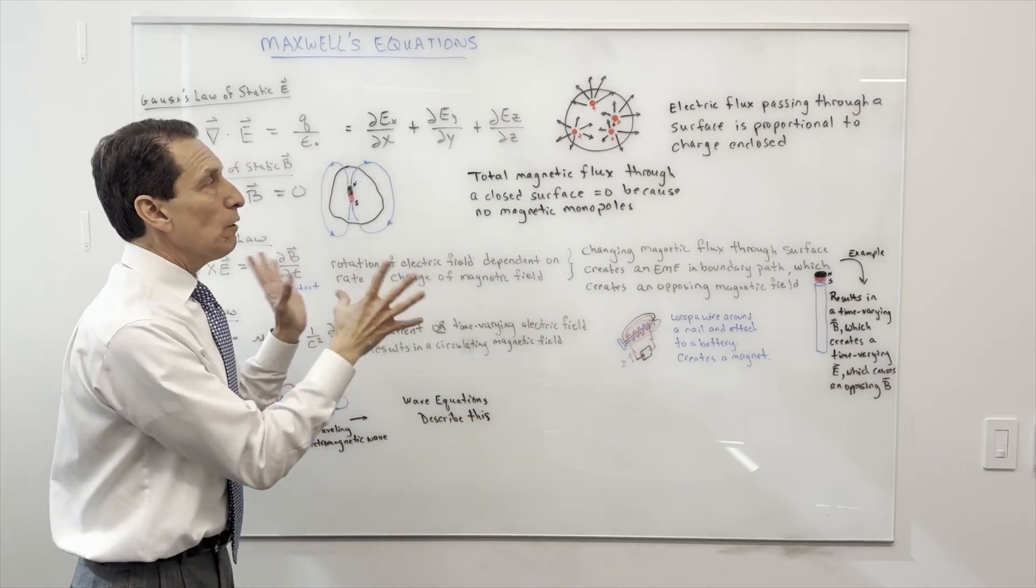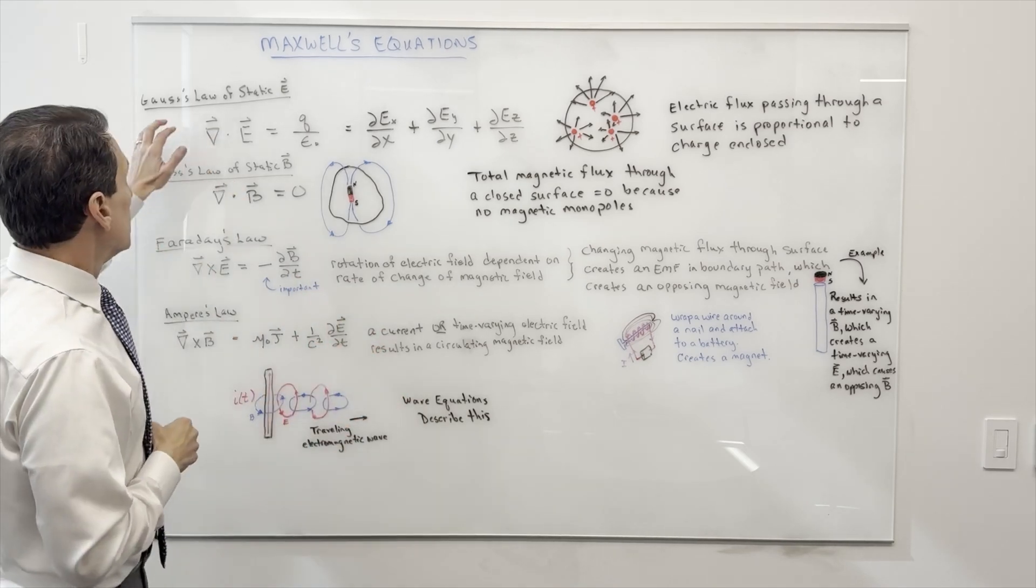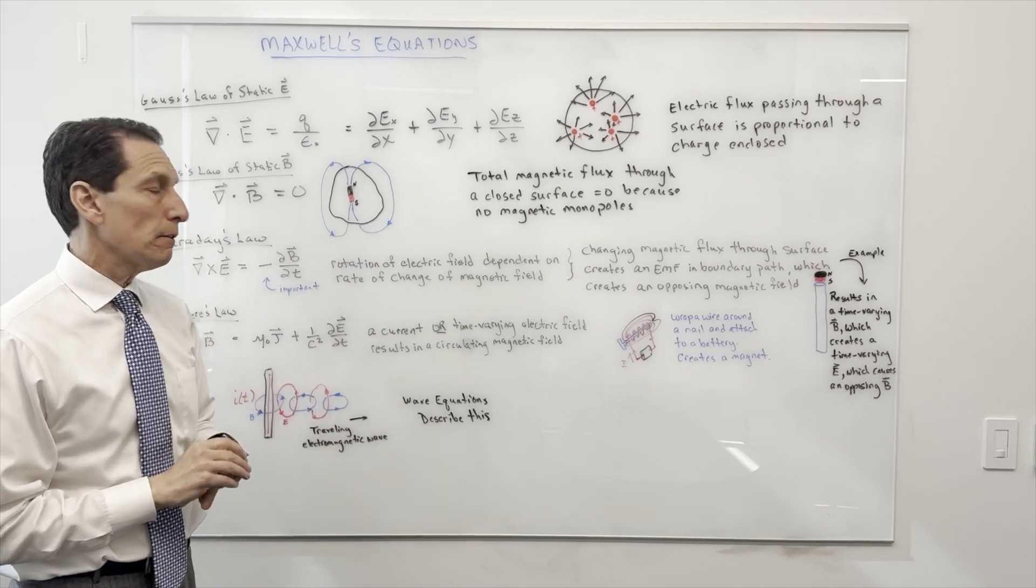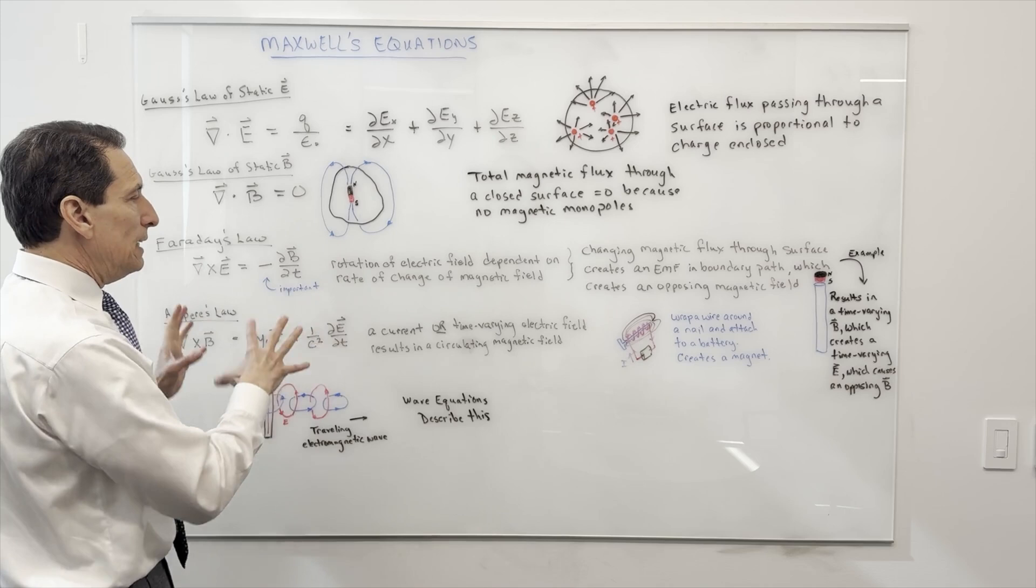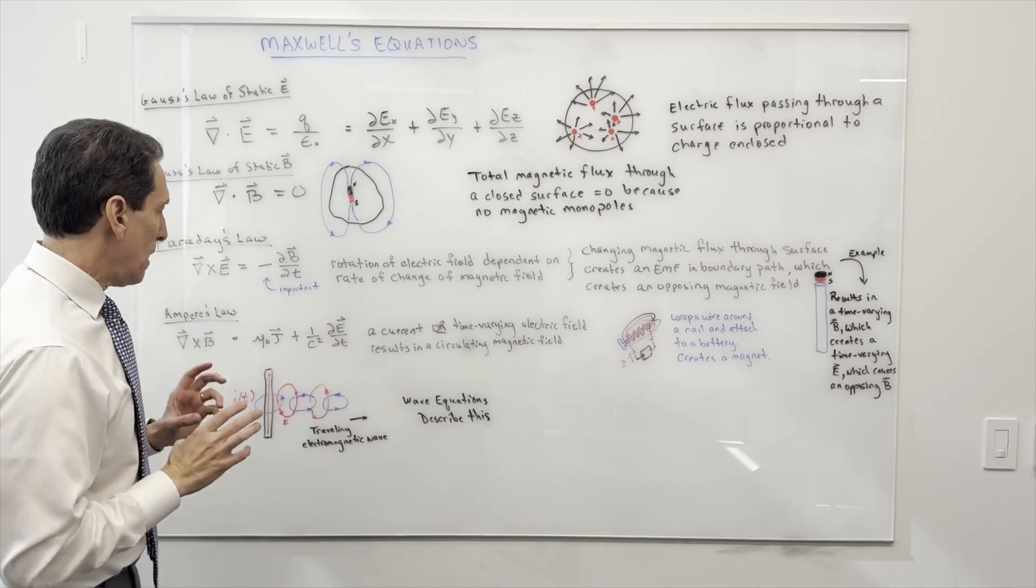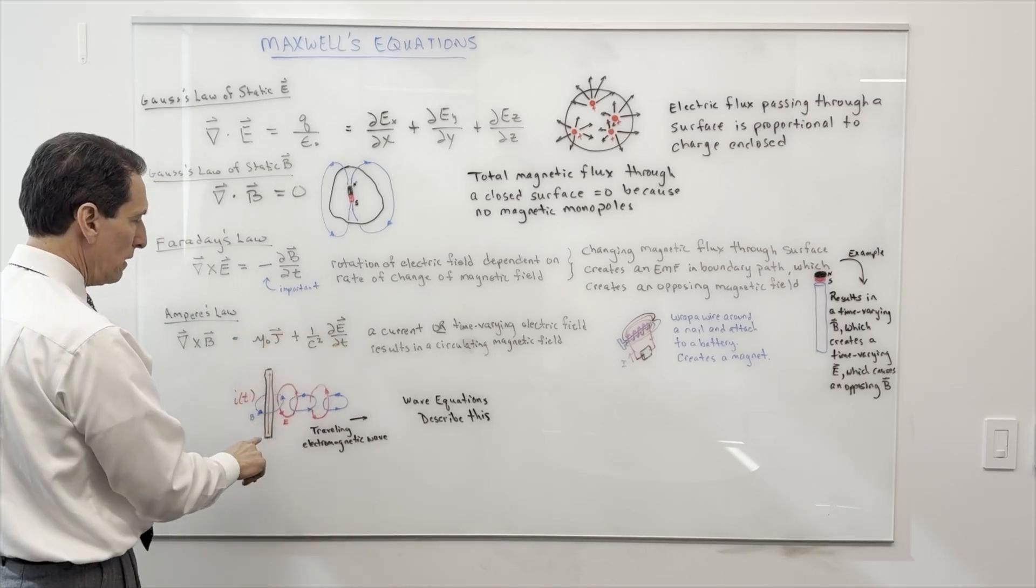So these are the four laws of Maxwell's Equations. All four of them are unique and interesting in their own right. You've got to take your hat off to Maxwell for figuring them out. They lead to some other interesting things which are a little beyond this talk, but I just want to point them out.